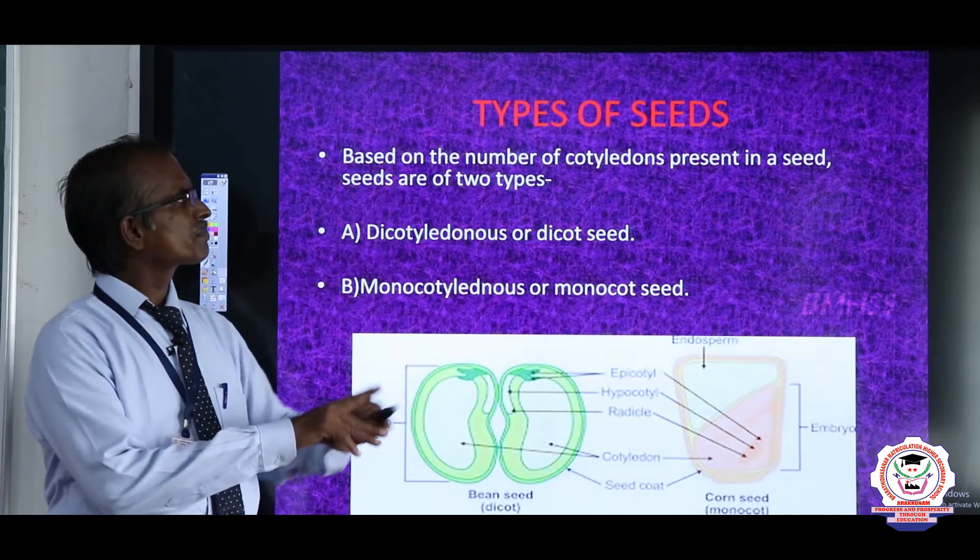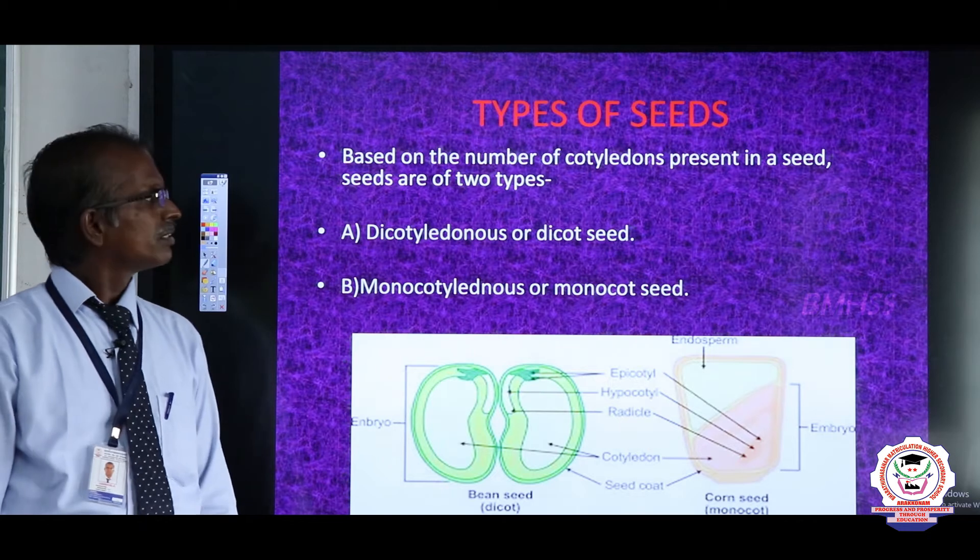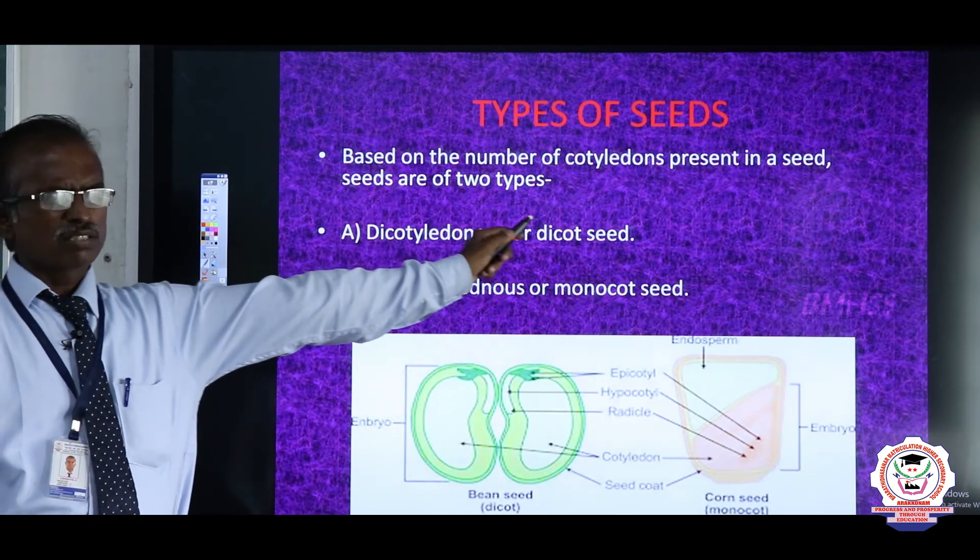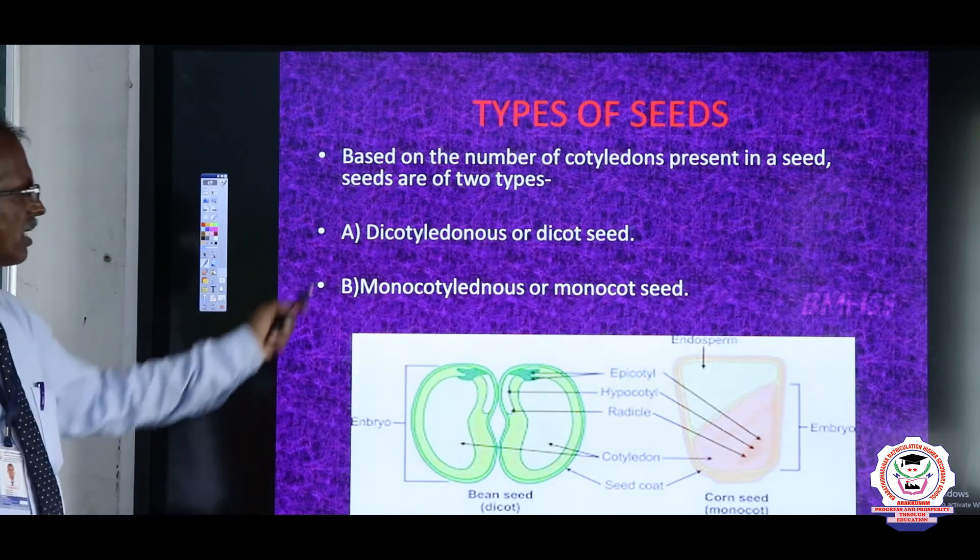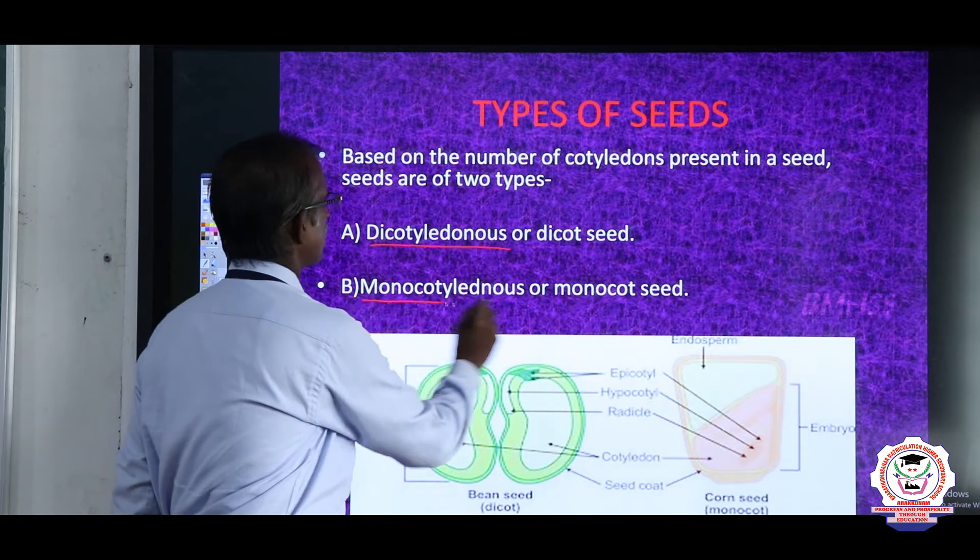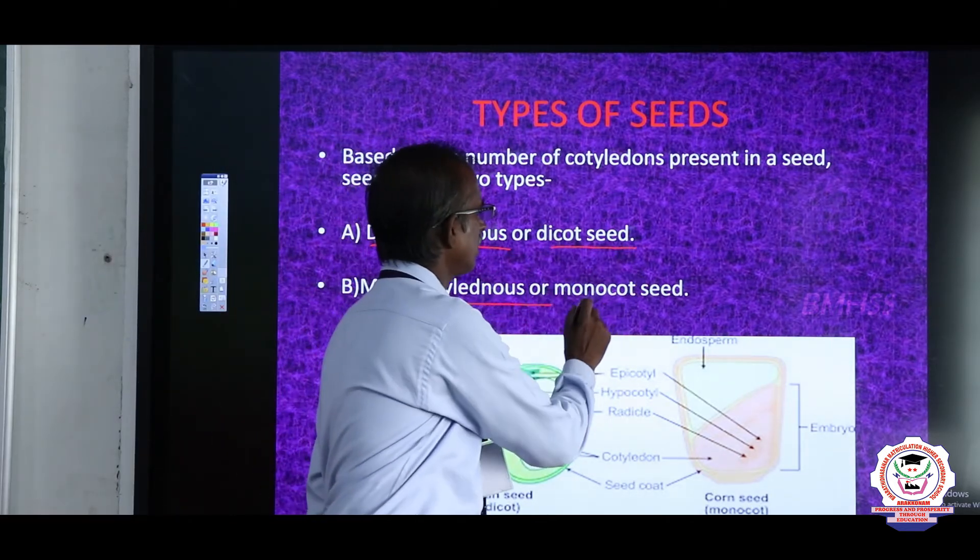Types of seeds: Based on the number of cotyledons present in a seed, the seeds are two types: dicotyledonous seed and monocotyledonous seed. In short, we call them dicot seed and monocot seed.